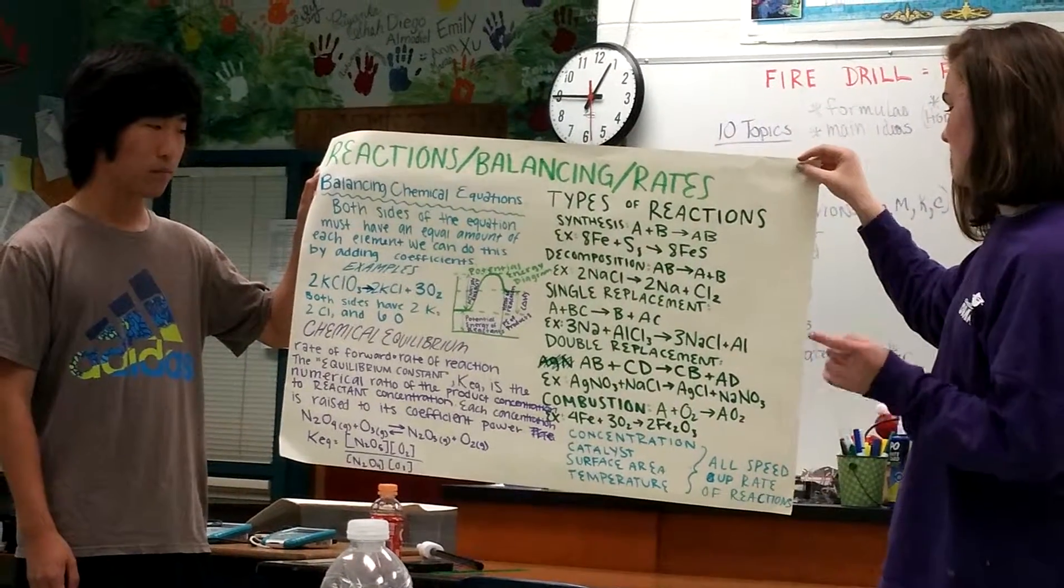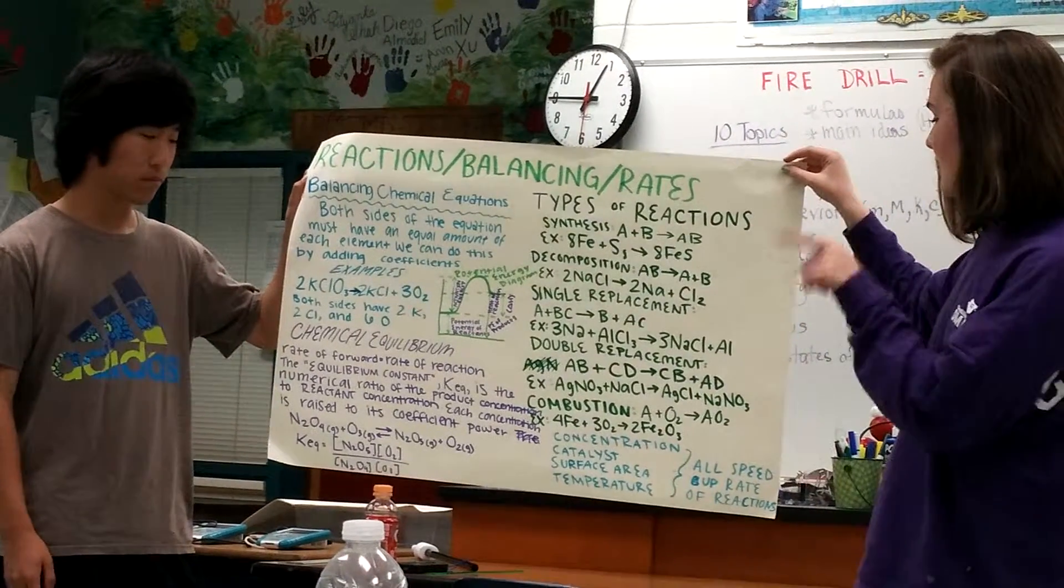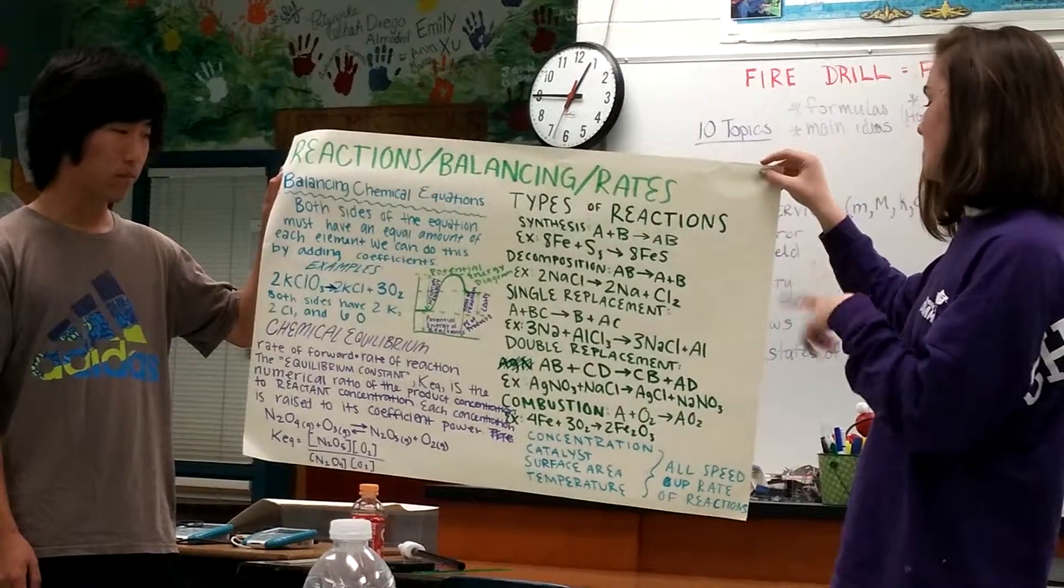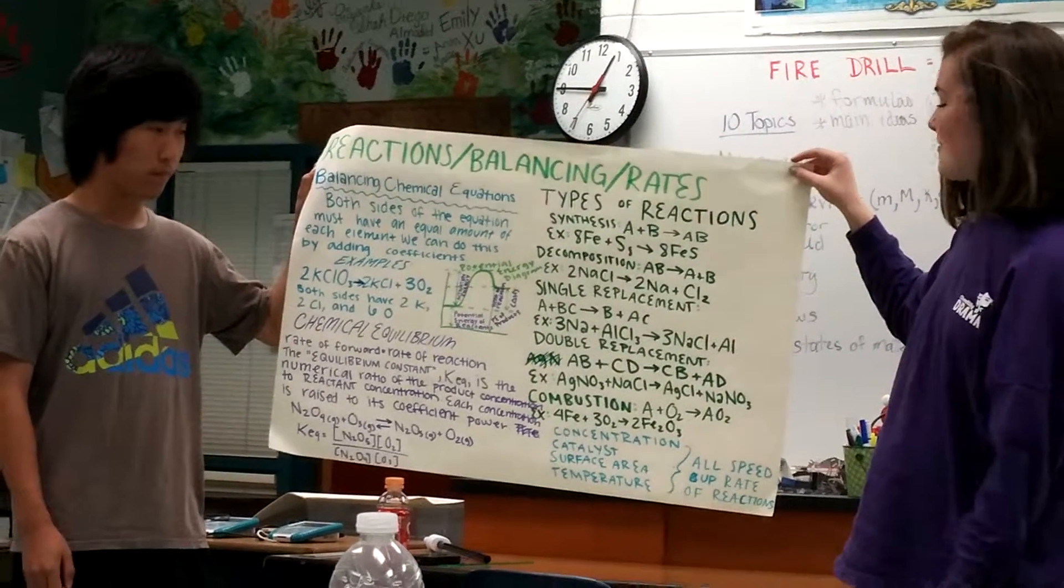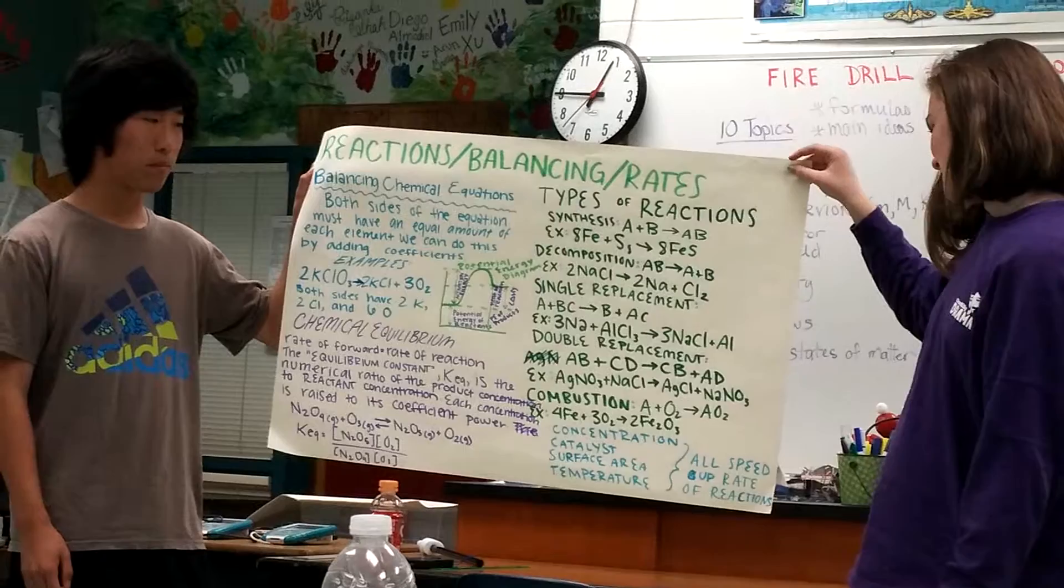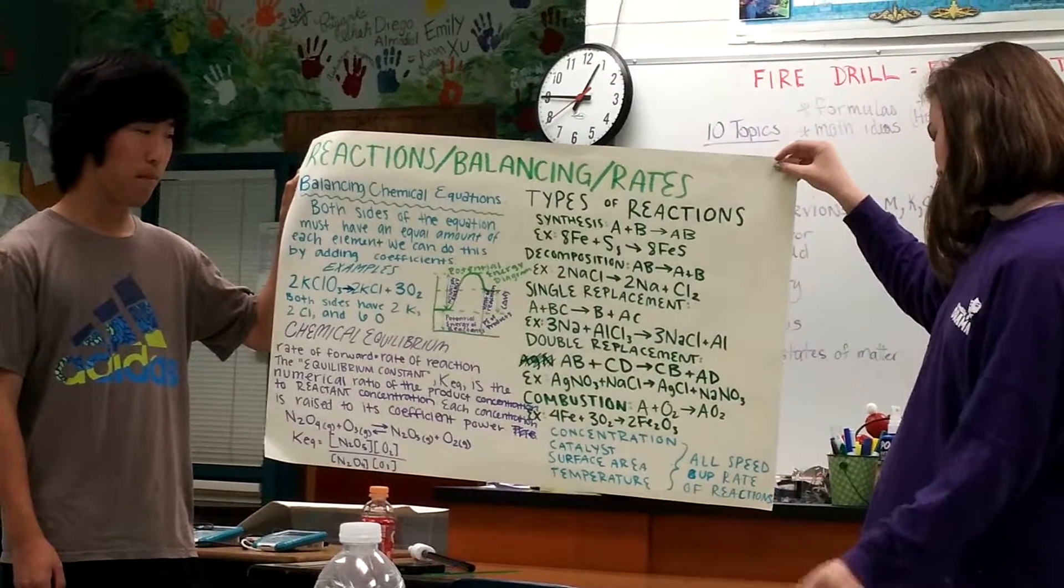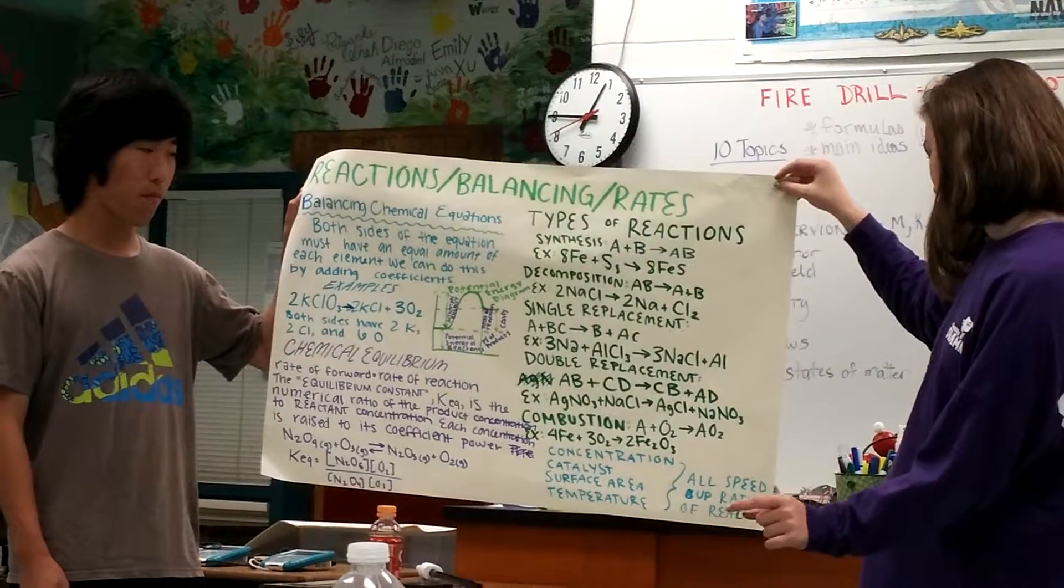And then the next one is double replacement, which is AB plus CD is CB plus AD. An example of that would be AgNO3 plus NaCl is AgCl plus NaNO3.